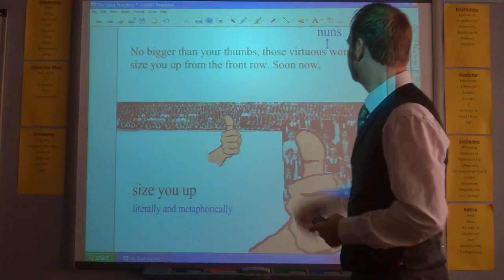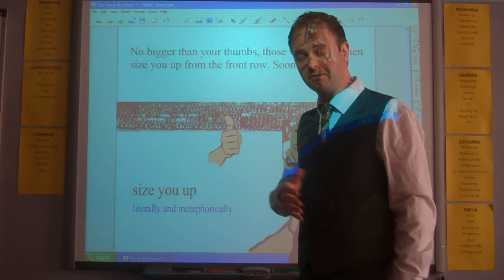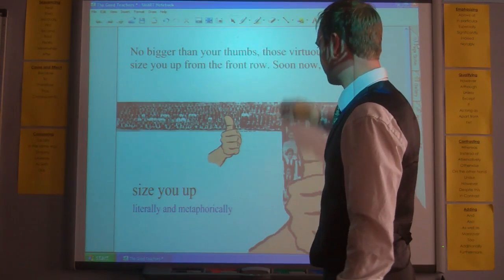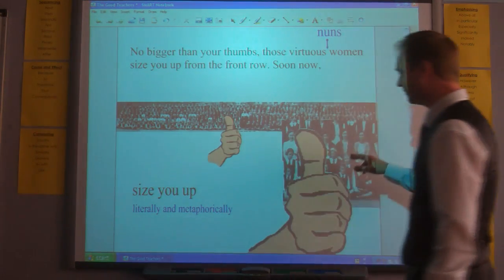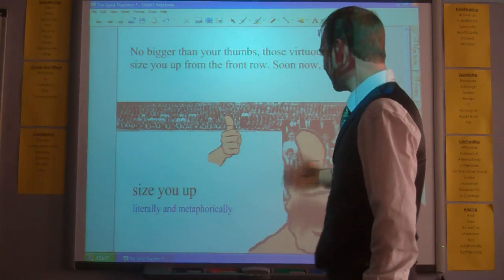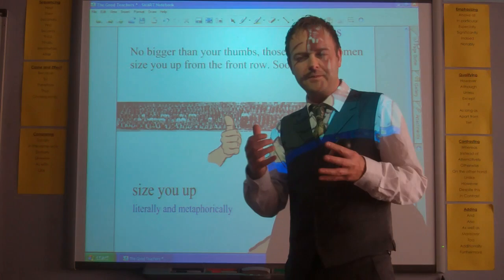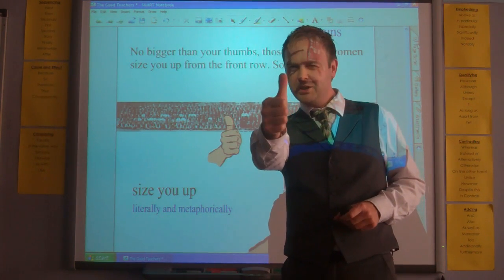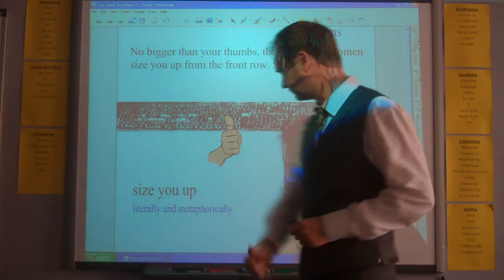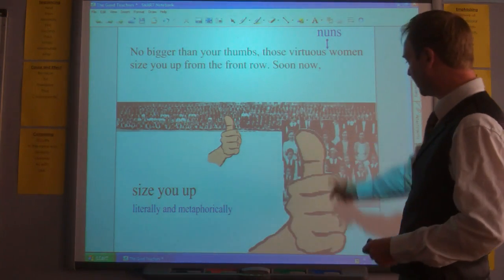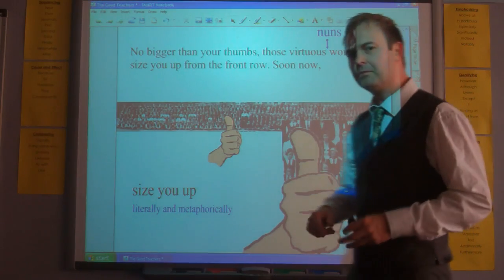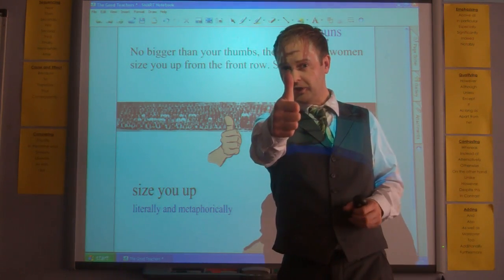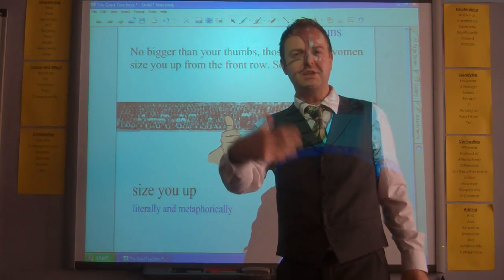'No bigger than your thumbs, those virtuous women.' The virtuous women could be referring to nuns, because Duffy herself went to a Catholic primary school, and it could be a reference to nuns generally in education. 'Size you up from the front row.' The teachers traditionally in these photographs are in the front row. But I think we've got an interesting metaphor being used here as well, because we get a sense of the poetic voice's thumb being placed up in front of the photograph to see if she can place it over the image of the teacher — literally sizing up the teacher, checking the size of the teacher there. But also, metaphorically, sizing up is a reference to working out or assessing an individual. So she's both literally sizing up by checking the size of the individual against her thumb, but also assessing and judging them.